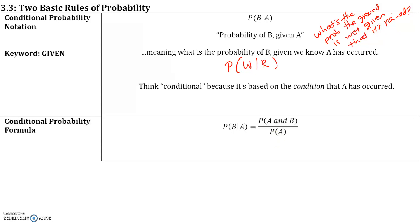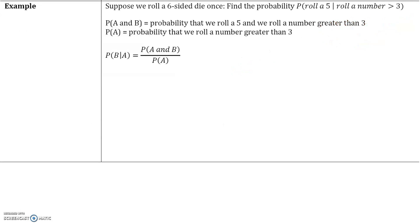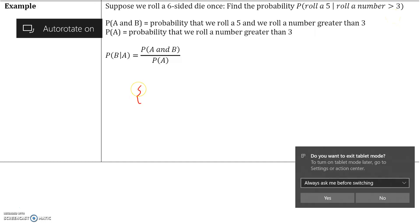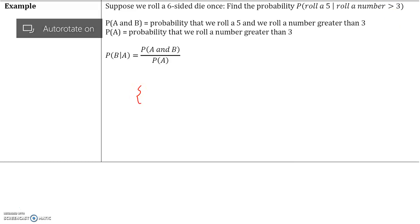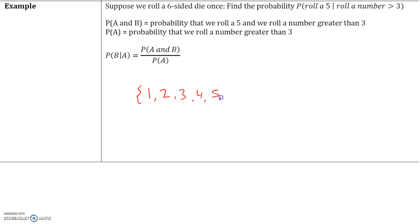Let's see an example. Suppose we roll a six-sided die once. Find the probability that we roll a five, given that we have already rolled a number greater than three. Let's look at our sample space for rolling one die: one, two, three, four, five, and six. These are the six possibilities when you roll a die once.